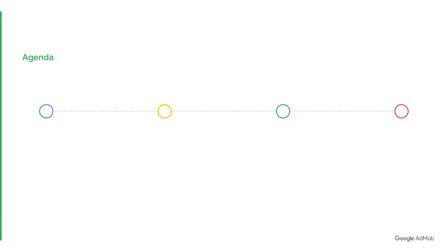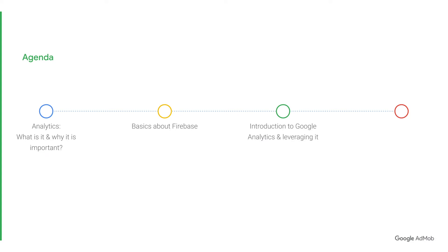Here's an overview of what we will cover. Firstly, what is analytics and why it is important as part of your monetization journey with AdMob. Secondly, some basics about Firebase. Thirdly, introduction to Google Analytics and how you can best leverage it for your app. And lastly, how to link AdMob to Firebase.